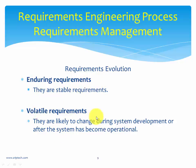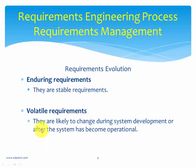Requirements can be classified into two types: one is called enduring requirements and the other is called volatile requirements. Enduring requirements are stable, generic requirements which are actually needed to run the show. Volatile requirements are likely to change during system development or after the system has become operational. Let us take an example of an ATM machine, which has both kinds of requirements.